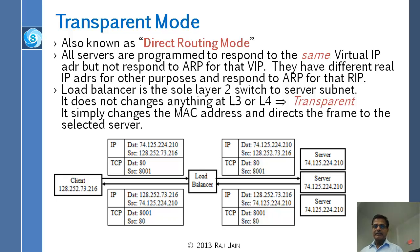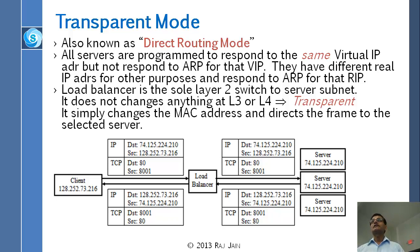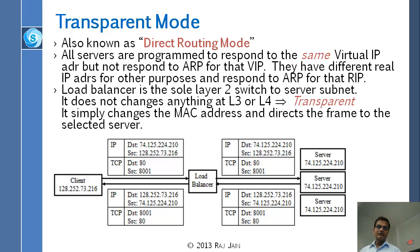The interesting thing is that you have just three possibilities: change none, change the port number, or change both. Changing the IP address is a problem because the server doesn't know the actual sender, and the server needs to know in many applications who the actual sender is. Not changing has the disadvantage of how do you get the return traffic back to the same path. That is the key of all these three modes.